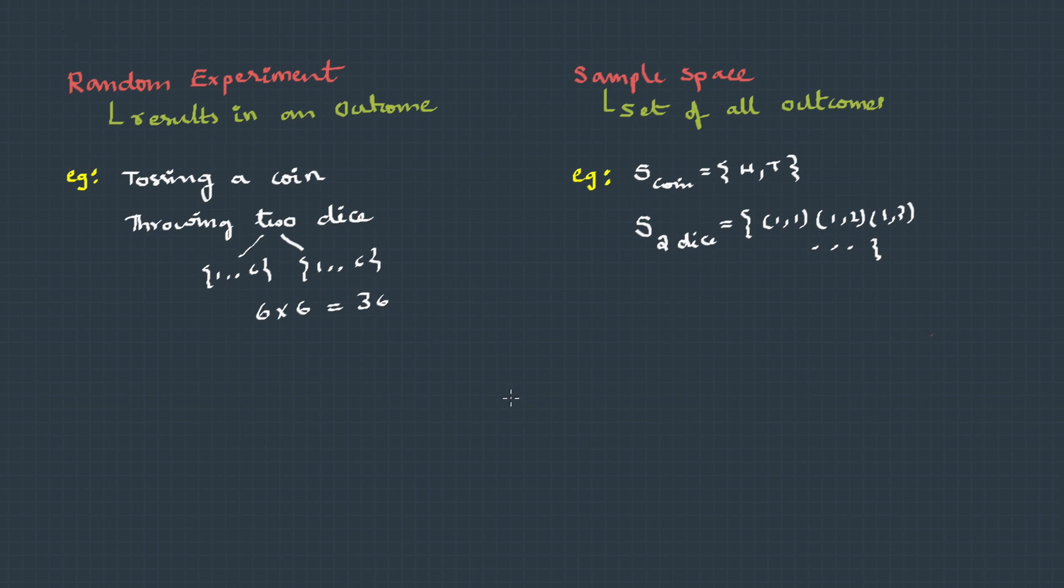And these are those. The next is event. An event is a subset of a sample space. Something like, if we consider the random experiment tossing a coin, we could define an event like getting a head. So here E is set with element H and you can clearly see this is a subset of the sample space of tossing a coin.